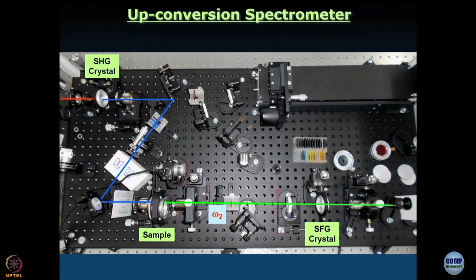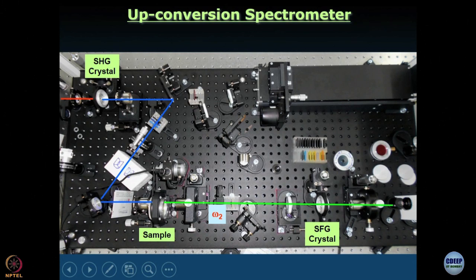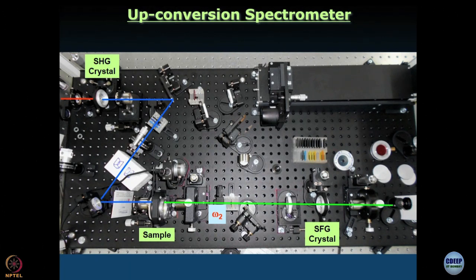So the path summary: fundamental red light gets frequency-doubled to produce blue light, which is directed and focused onto the sample. Fluorescence goes through a long pass filter to eliminate excitation light, then is focused by a lens onto a sum frequency generation crystal. That covers one arm of the instrument — only half the story. The remaining half, where omega 1 comes in, is on the other side of the dichroic beam splitter.